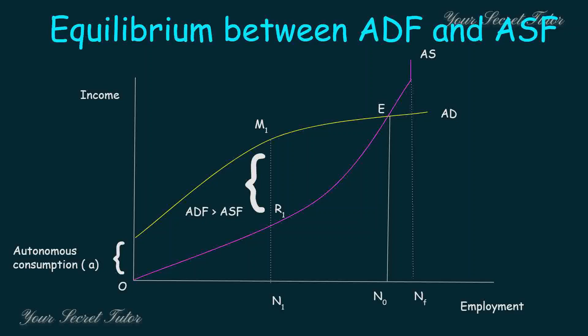Full employment is very difficult to reach. It requires government support and government investment to push demand. In a depression, unless the government pumps money into the economy to increase demand, full employment cannot be reached. We need an increase in the demand curve to reach full employment level.